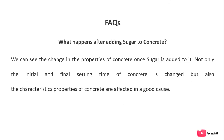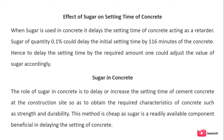Frequently asked question — what happens after adding sugar to concrete? Once sugar is added, changes in the properties of concrete occur: not only initial and final setting time, but also the chemical characteristic properties of concrete are changed positively. The effect of sugar on setting time is that it delays the setting time of concrete up to two hours. The role of sugar in concrete is to delay or increase the setting time at the construction site to obtain the required characteristics, and this method is cheap as sugar is a readily available component.